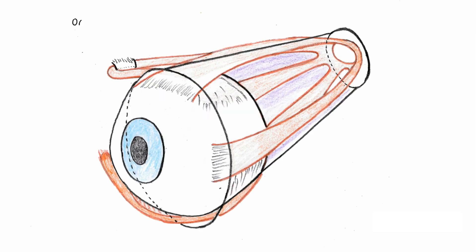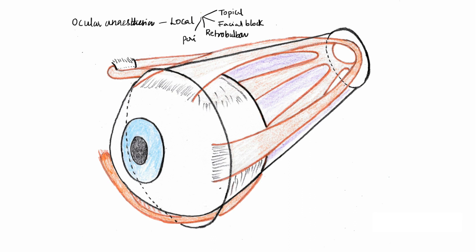When it comes to ocular anesthesia, most ocular operations are managed with local anesthetics because they are cheaper, economical, easy to perform, and post-operative recovery time is less. The four methods commonly used are topical anesthesia, facial blocks, retrobulbar block, and peribulbar block.